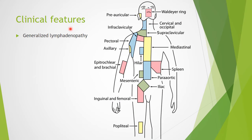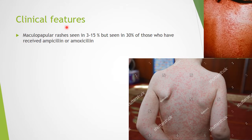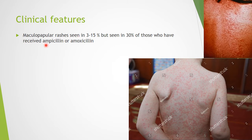There is also generalized lymphadenopathy — all lymph nodes can be swollen or inflamed. The maculopapular rash is seen in 3 to 15% of cases, but is seen in 80% of those who have received ampicillin or amoxicillin. So if a patient with such a rash and similar symptoms has taken amoxicillin or ampicillin and the rash appeared after intake, then it is a case of Infectious Mononucleosis.